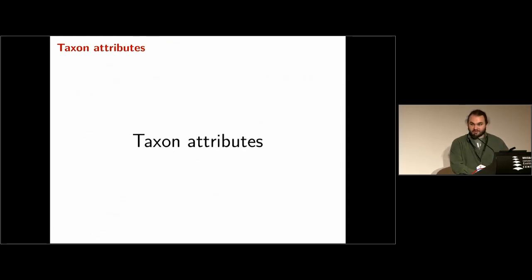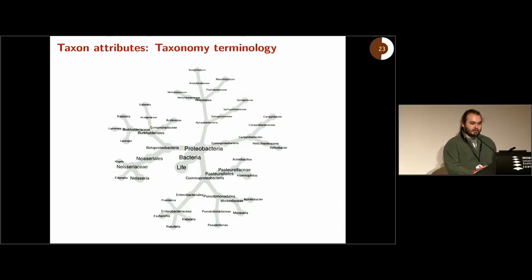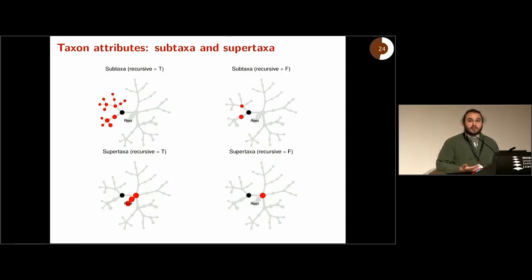Now that you have this information in this format, there are various functions that will give you insights into your taxonomy and your associated data. Before I go into those, I'd like to talk about some terminology used in this package. We'll be using this tree as an example - here's a taxonomic tree of Proteobacteria. Important concepts are subtaxa and supertaxa. You can think about these recursively or non-recursively, and the functions that use these terms usually have a recursive option. For example, if you look on the top left, all the red taxa here are subtaxa recursively of this black taxon. If you think about it non-recursively, it's just these immediate subtaxa.